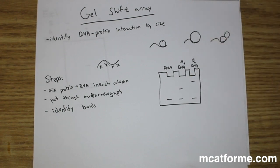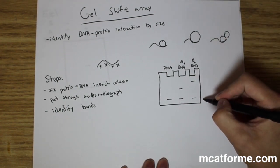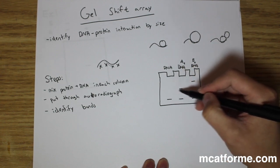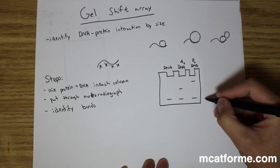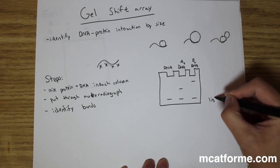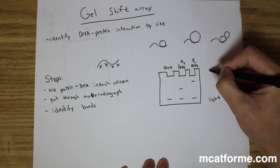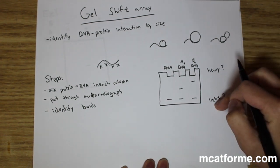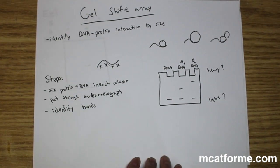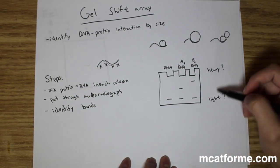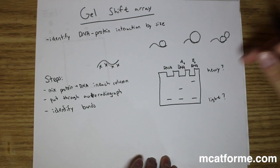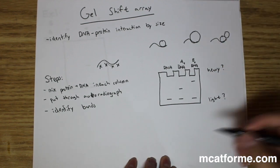Why do we have bands at the bottom, bands in the middle, and bands at the top? Are the bands at the bottom going to be light or heavy? The answer is: light molecules are on the bottom — very small molecules are on the bottom — and heavy or bulky molecules are going to be at the top.